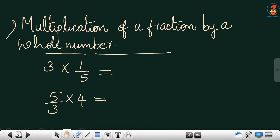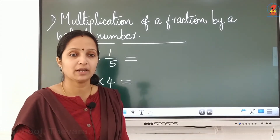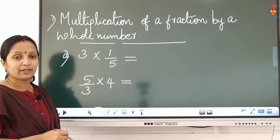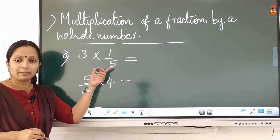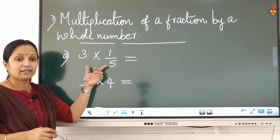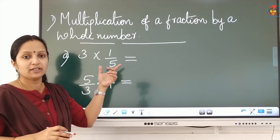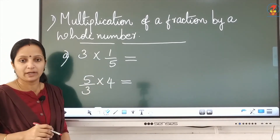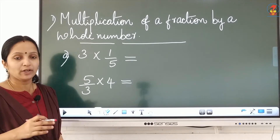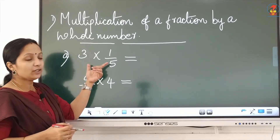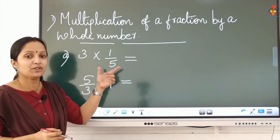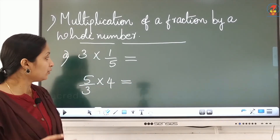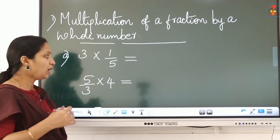So if you want to multiply a fraction with a whole number, the first question is 3 into 1 by 5. What is the meaning of 3 into 1 by 5? It means addition of 3 figures, each representing one shaded part out of 5 equal parts.